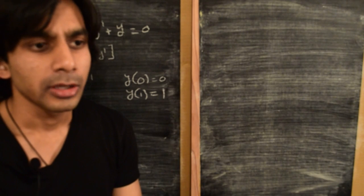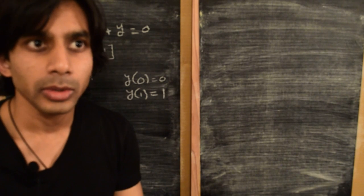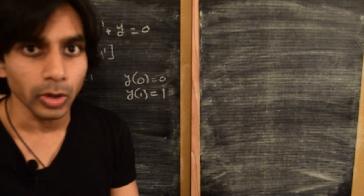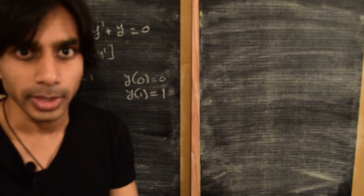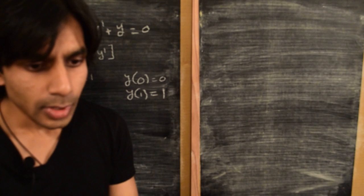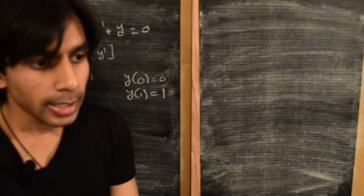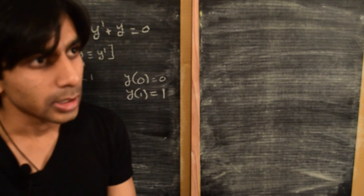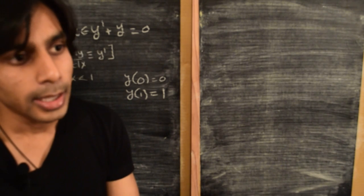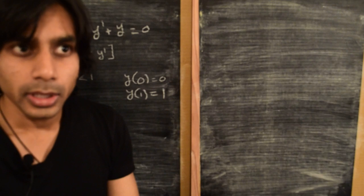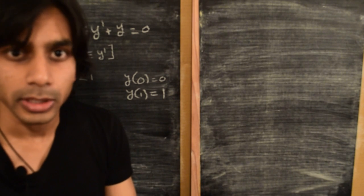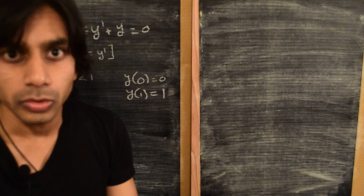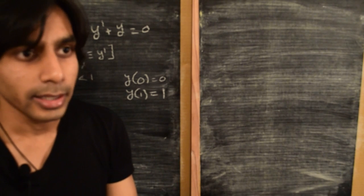Welcome back. In the last video we started talking about how to solve ordinary differential equations using perturbation methods — just a basic introduction on how to go about this. We identified two different regimes depending on where the small parameter is in the differential equation. Let's get started with the case when the small parameter is not multiplying the highest derivative term, where we might be able to use the regular perturbation methods.